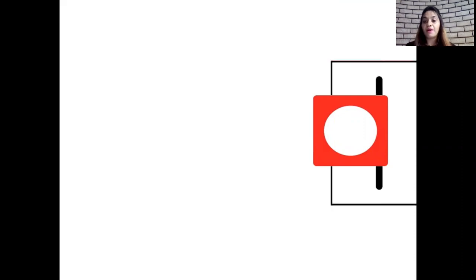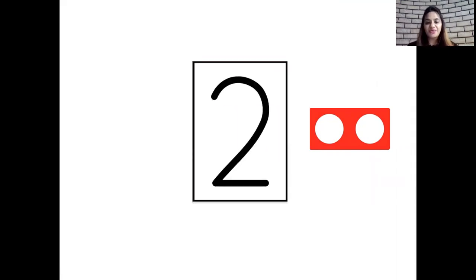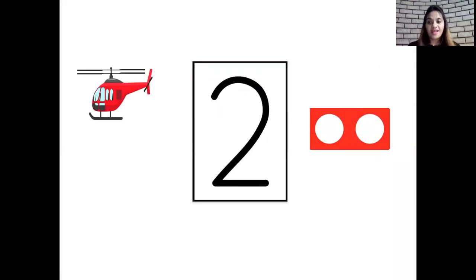Okay children, now let's revise our numbers and see the number tiles also. Which number pattern tile is this? Absolutely correct children. This is the number pattern tile of number 2 because it has two holes, and here we have one helicopter and two helicopters.